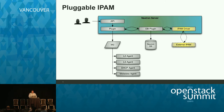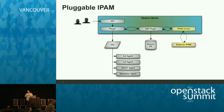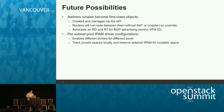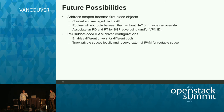The IPAM driver today in Liberty is one for the entire installation, but the driver configuration is intended to be on a per-subnet-pool basis. So you can actually have a different allocation strategy for different subnet pools. That gets us into some future ideas we've been talking about — and we're really looking for feedback from the operator community on what use cases make sense and how we should bring this in.